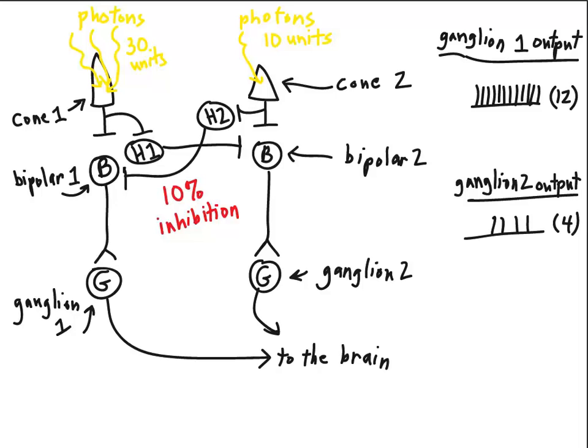We can see that since horizontal cell number 1 is receiving 30 units of disinhibition, its total output would be 3 units of inhibition to bipolar cell number 2. So we'll come over here. Since we know that the total output on ganglion cell number 2 is 4, we're going to take away 3 representing that inhibition coming from horizontal cell number 1.